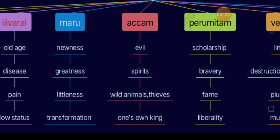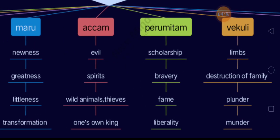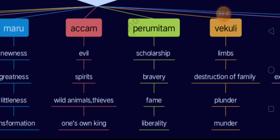The source of Perumidham is also fourfold: scholarship, bravery, fame, and liberality. The source of Vekuli is fourfold: the extremely painful cutting of limbs, destruction of family, plunder, and murder.